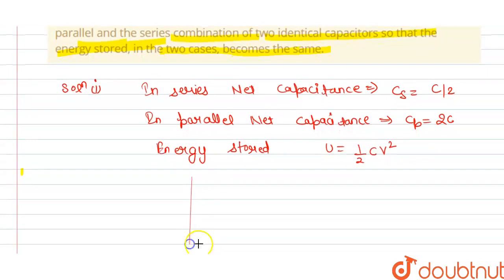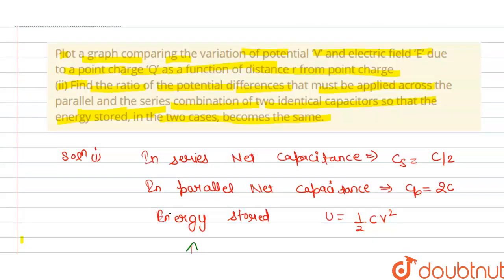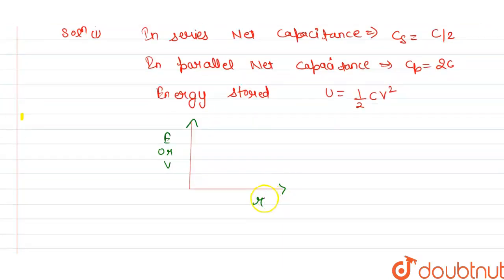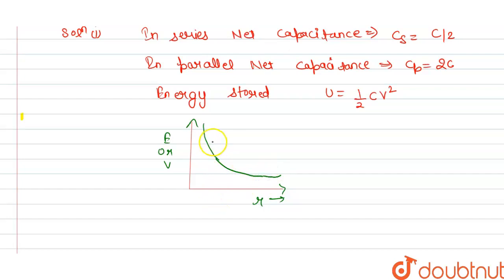On the graph, the y-axis represents electric field E or potential V, and the x-axis represents r, the distance. The curve for electric field E and the curve for potential V are plotted, showing how each varies with distance r from the point charge.